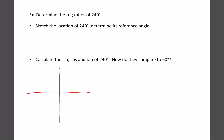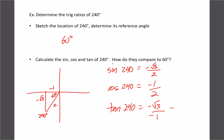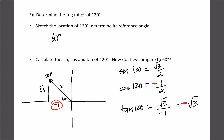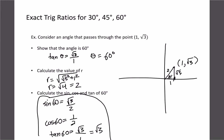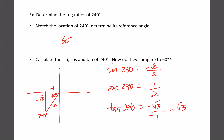Let's try 240 degrees, which lands in the third quadrant. The reference angle is still 60 degrees, but now both coordinates are negative: negative 1 and negative root 3, with r still 2. Sine of 240 is negative root 3 over 2. Cosine of 240 is negative 1 over 2. And tan of 240 is negative root 3 over negative 1, which simplifies to positive root 3. The same answers appear, just with different negatives.